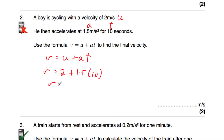So v is equal to 2 plus 15, because 1.5 times 10 is 15. And then 2 plus 15 is 17. So v is equal to 17 metres per second.